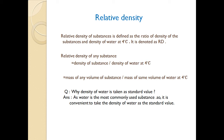Now we will learn about relative density. Relative density of a substance is defined as the ratio of the density of the substance and the density of water at 4 degrees Celsius. It is denoted as RD (capital RD). So as a formula: relative density of any substance is equal to density of substance divided by density of water at 4 degrees Celsius.